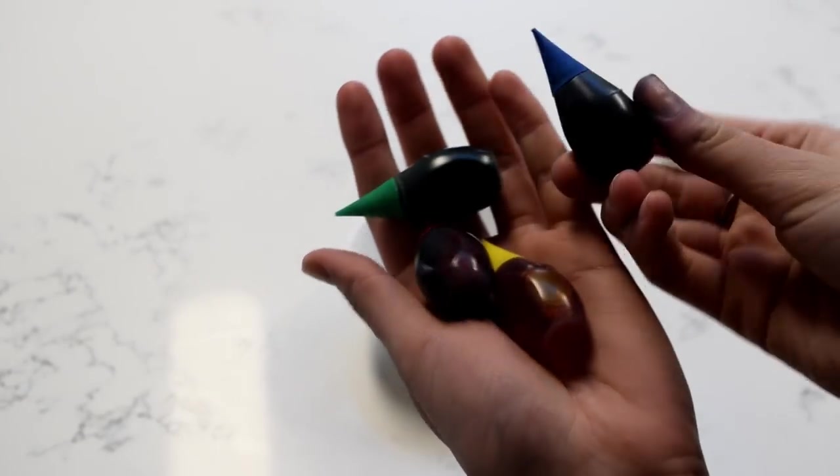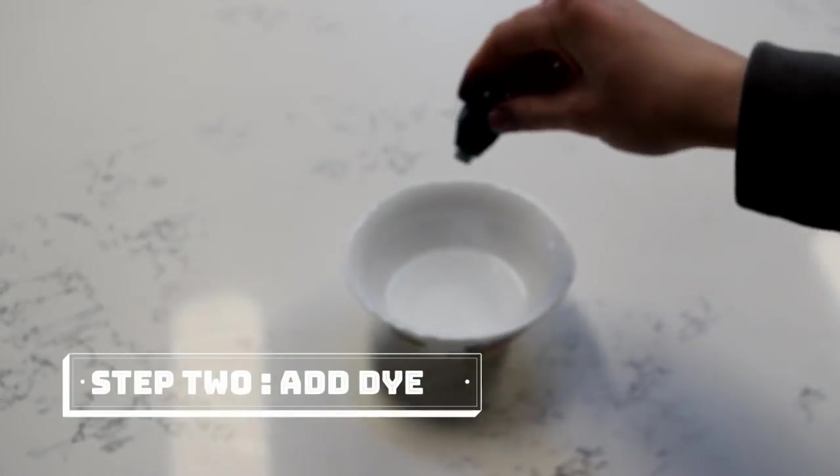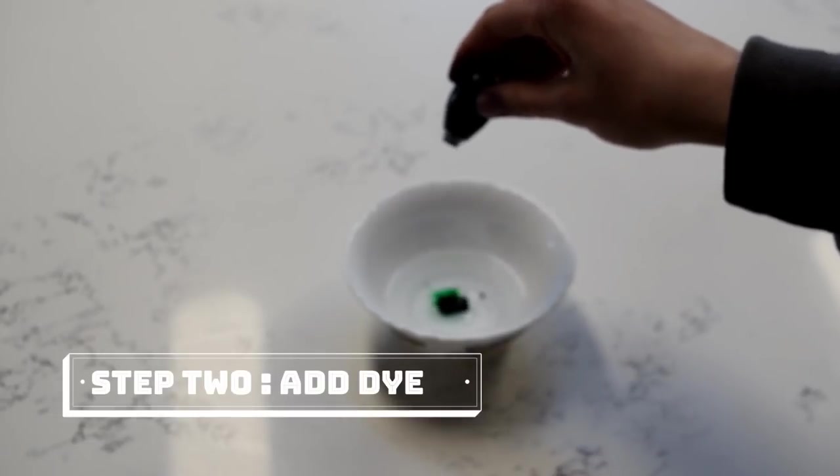So for the first step we're just going to be filling our bowl with water and then you're going to want to choose whatever color you want to use for your first batch of paint. And you're just going to pour a couple drops in there and I had to add more later on but this is just what I started out with.